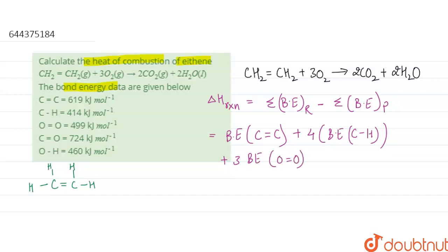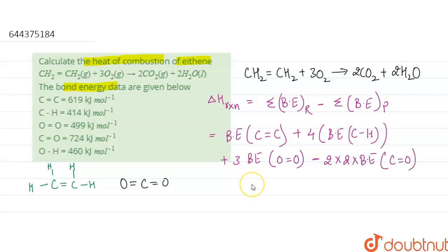Minus — for the product side — 2 times CO₂. The structure of CO₂ is C=O and C=O, so there are two carbon-oxygen double bonds per molecule. We write: 2 multiplied by 2, times the bond energy of C=O.